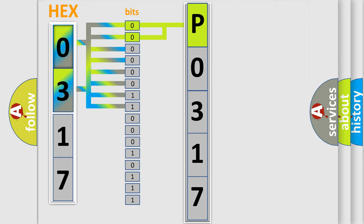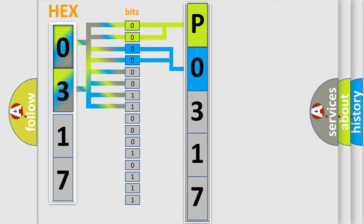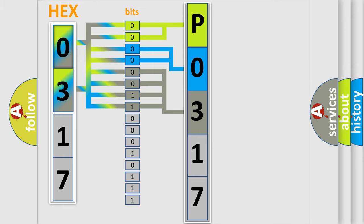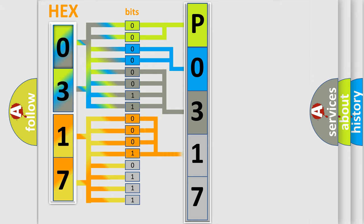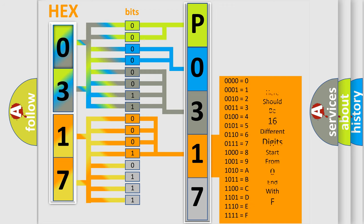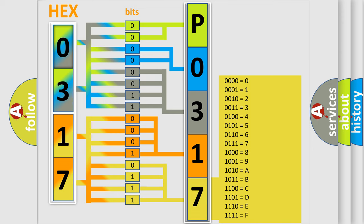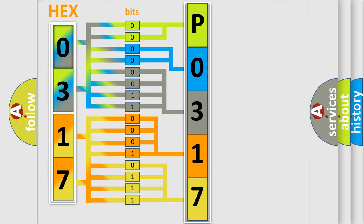The next two bits determine the second character. The last bits of the first byte define the third character of the code. The second byte is composed of a combination of eight bits. The first four bits determine the fourth character of the code, and the combination of the last four bits defines the fifth character. A single byte conceals 256 possible combinations. We now know in what way the diagnostic tool translates the received information into a more comprehensible format.